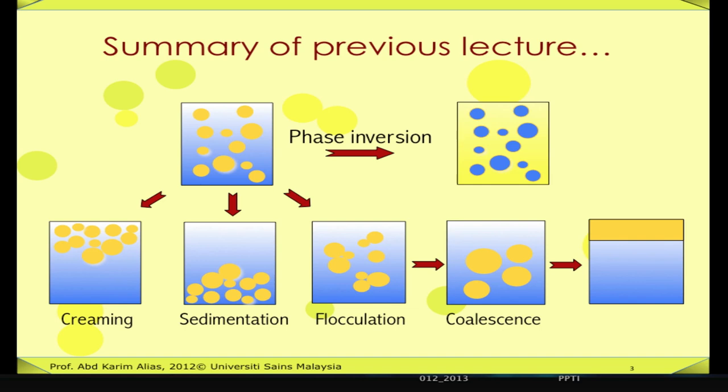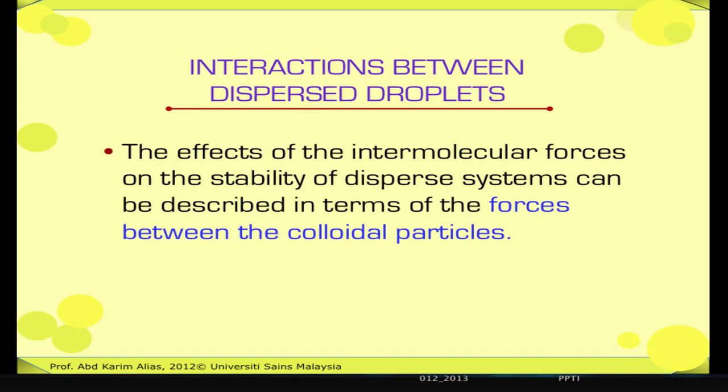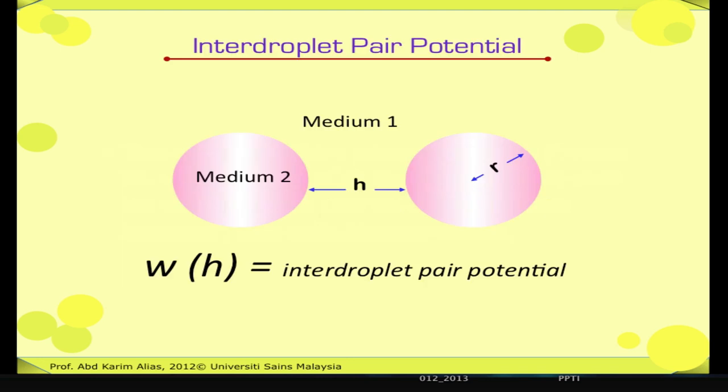That's good, Kathy. Now let me go into details. Colloidal interactions govern whether emulsion droplets aggregate or remain as separate entities. The effects of the intermolecular forces on the stability of dispersed systems can be described in terms of the forces and the energy potential between the colloidal particles. Let's focus our attention on two droplets in the emulsion as shown in the picture.